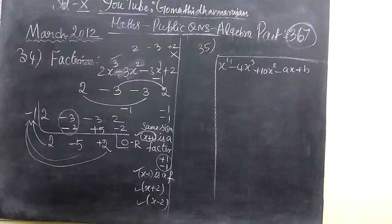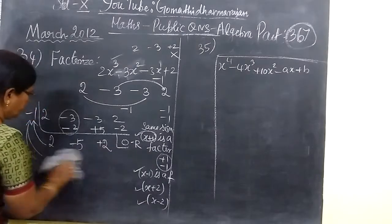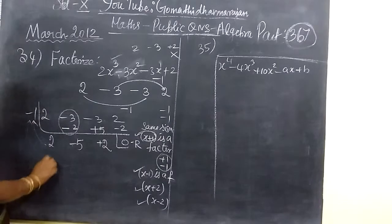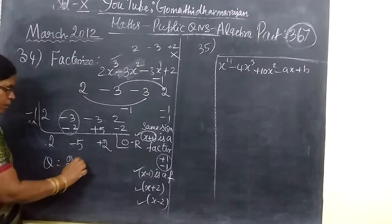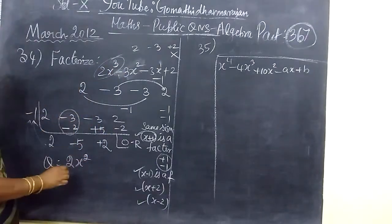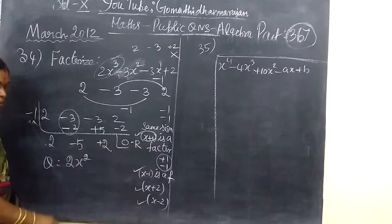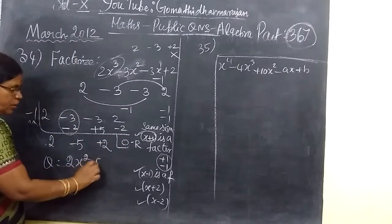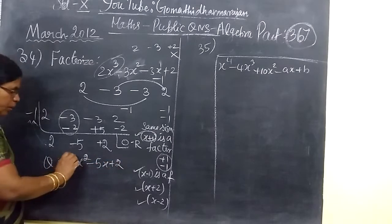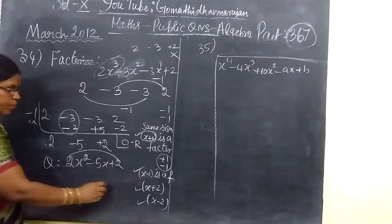Now here we are writing, and the quotient is there. The quotient is 2x² minus 5x plus 2. 2 is equal to 2 times 1, 2 is equal to 4. Multiply.